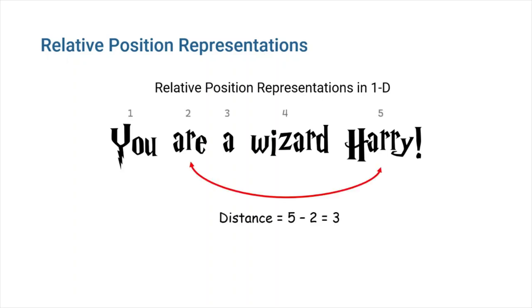For example, when you want to calculate the self-attention weights for second and last words, you have to count the number of words between these two, which in this case is 3.